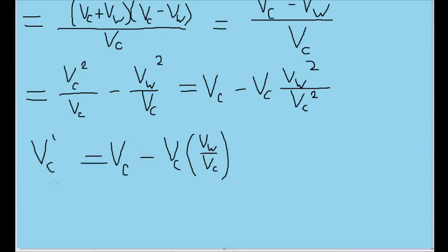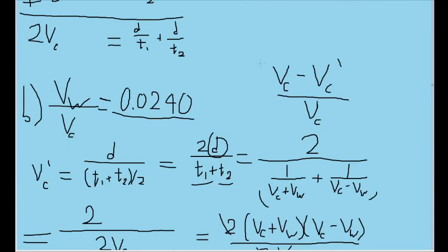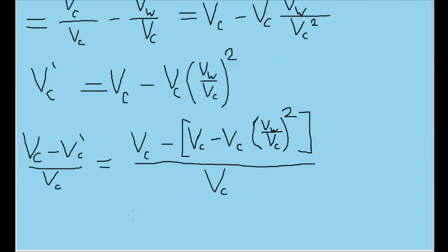So that's what v_c prime is equal to. But of course, let's not forget that we're trying to find this fractional difference up above. So let's take this little rough formula that we wrote out earlier and try to plug in what we've now found for v_c prime into that. Plugging in our v_c prime equation into our fractional difference expression, we can see that it expands out into this larger thing right here.